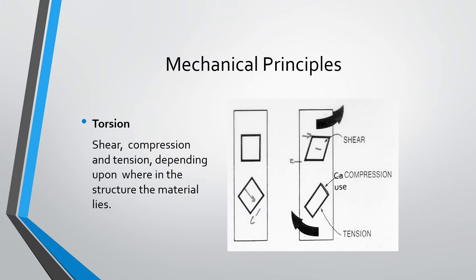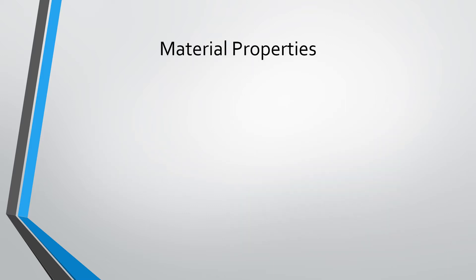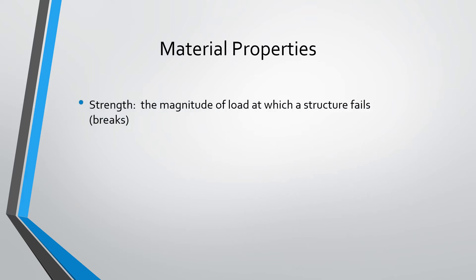Torsion is a type of loading that can cause a variety of different stress types — shear, compression, or tension — depending upon the location and orientation of the material within the structure. The strength of a structure is the magnitude of load at which that structure fails or breaks.